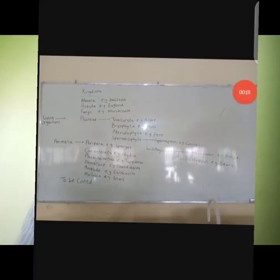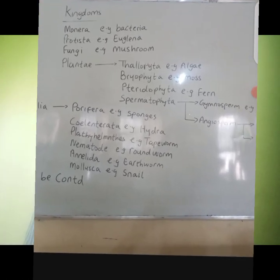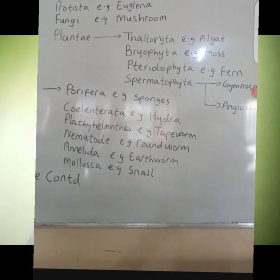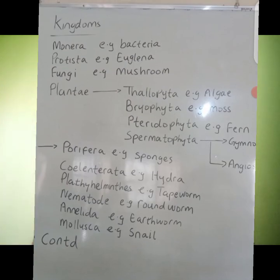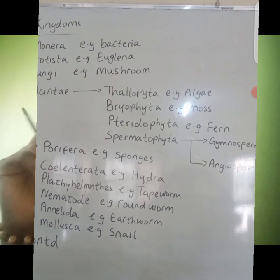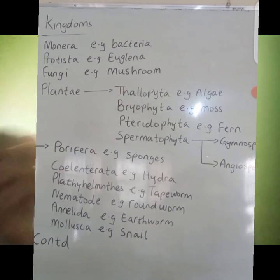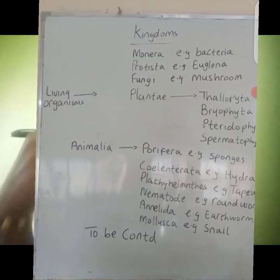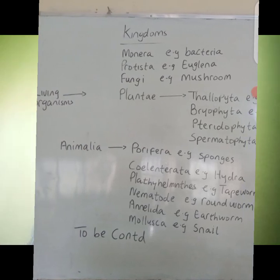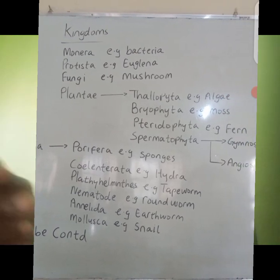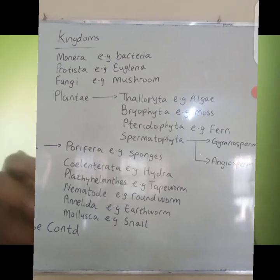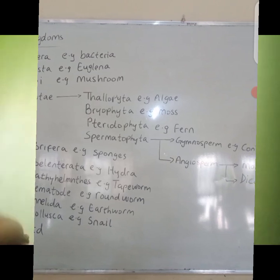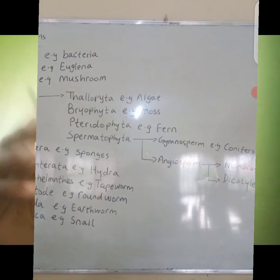The first kingdom is kingdom Monera — examples include bacteria. Number two is kingdom Protista — examples include Euglena and amoeba. Number three is kingdom Fungi — examples include mushroom and yeast.